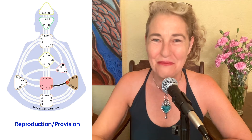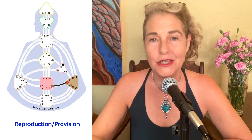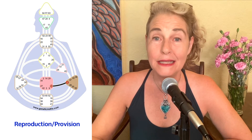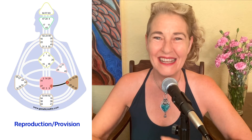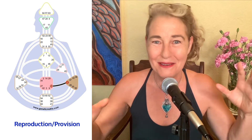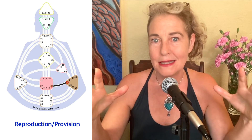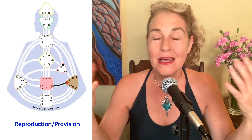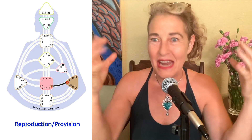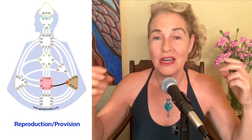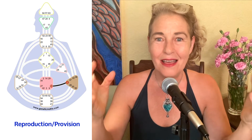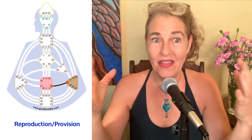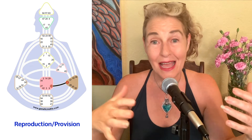In traditional human design, channel 59-6 is known as the channel of reproduction, and in quantum human design it's the channel of provision — colloquially known as the channel of mating, where love and war exist in the chart. Interestingly, war doesn't live in either of the collective circuits — neither the logic circuit nor the sensing circuit, which are the big circuitry having to do with nations, the nation-state, infrastructure, and global things. There's no war in that circuitry, so when we see war at that level, we know it's not in alignment with our evolutionary journey.